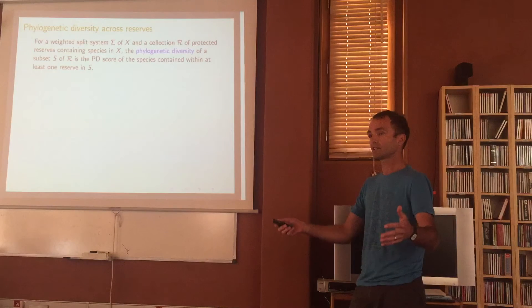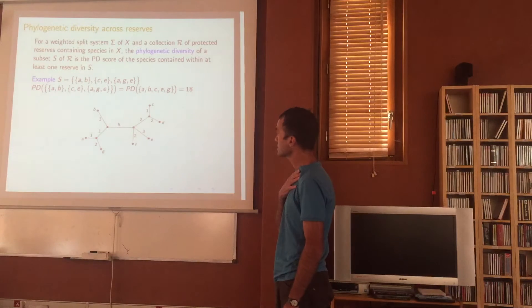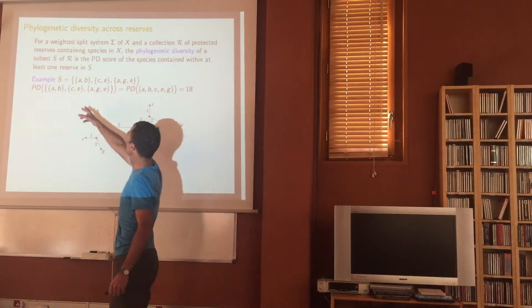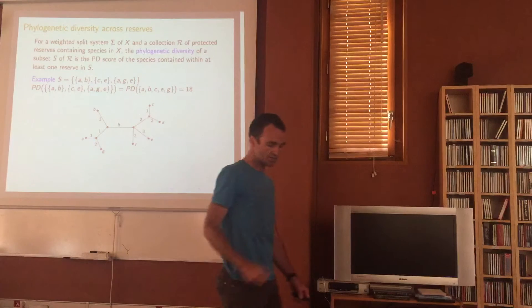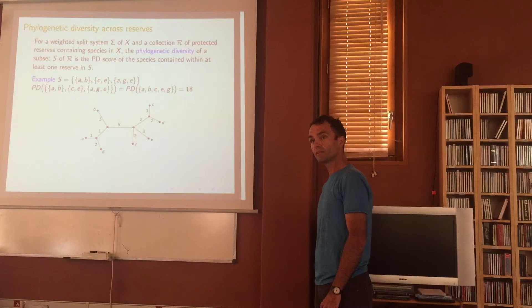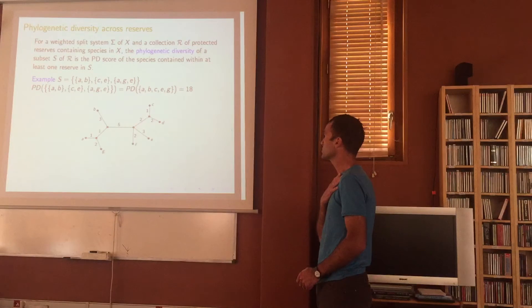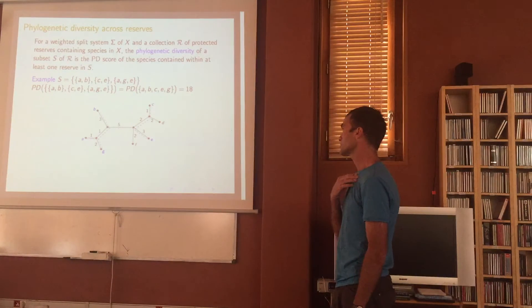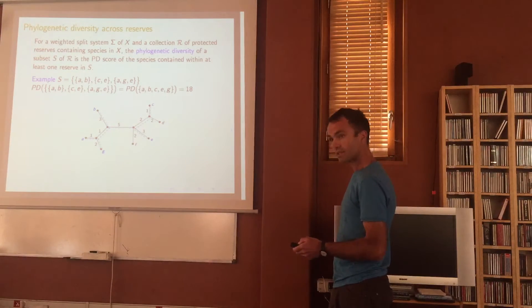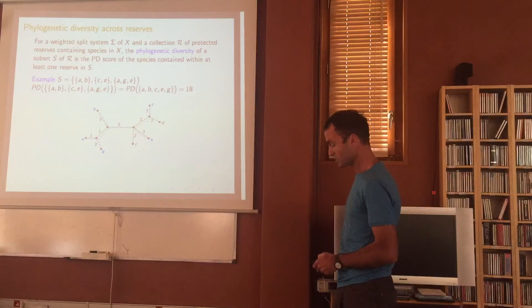For example, here's a subset {A,B,C,E} and {A,G,E} — that's S. The PD score is simply the PD of their union. The tree connecting {A,B,C,E,G} gives a PD of 18. That's what it means to compute PD across reserves: you take the union of the reserves you want to protect.